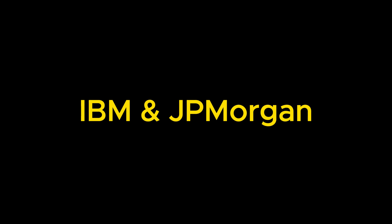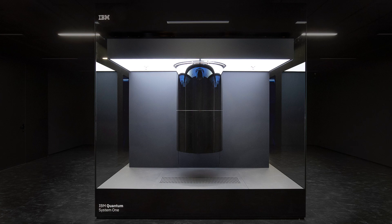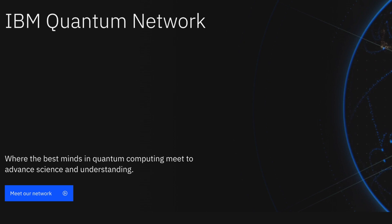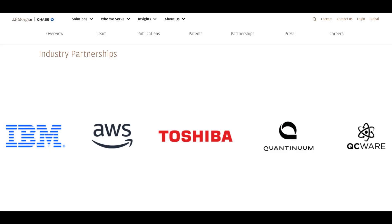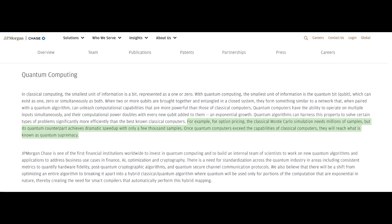IBM and JP Morgan: IBM, a pioneer in quantum computing, launched the first commercial quantum computer in 2019. To date, it has installed over 20 IBM Quantum System Ones globally and built a quantum network with over 210 large companies, including more than 10 large banks. JP Morgan is one of them. In 2020, in collaboration with IBM and ETH Zurich, the bank published a paper titled 'Option Pricing Using Quantum Computers,' achieving a quadratic speed-up compared to classical Monte Carlo methods. While classical Monte Carlo simulation needs millions of samples, its quantum counterpart achieves a significant speed-up with only a few thousand samples.